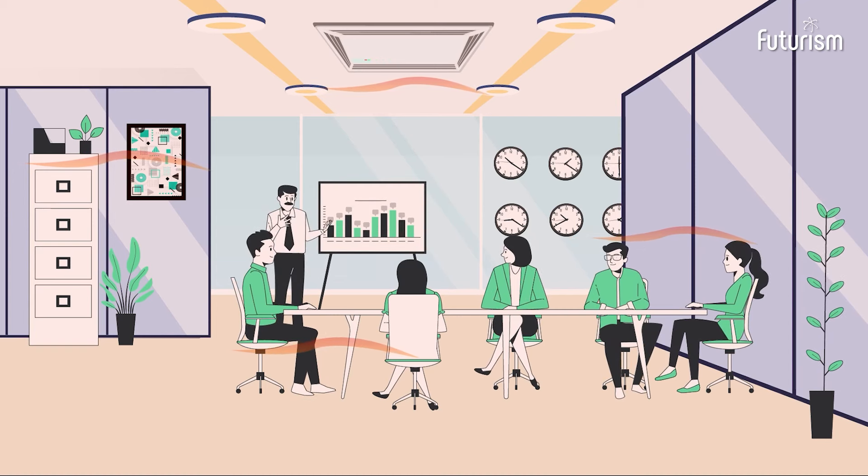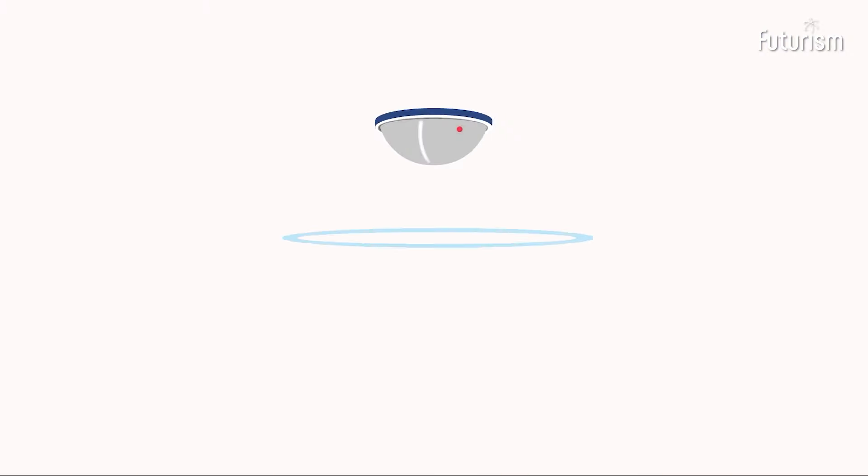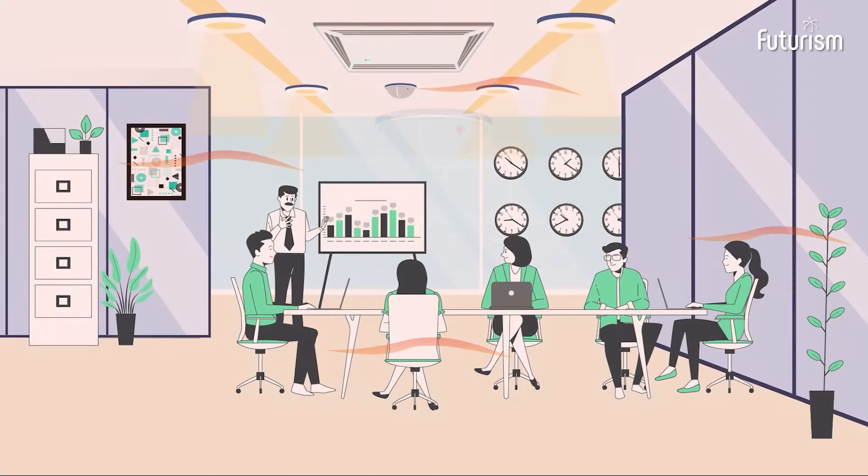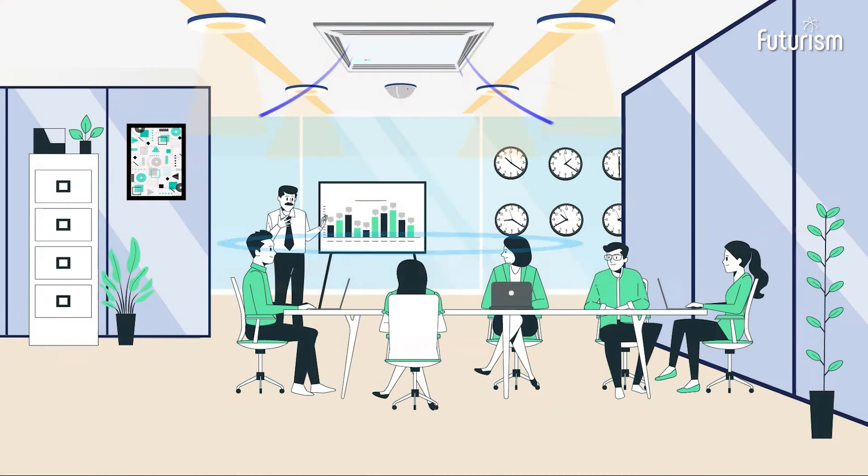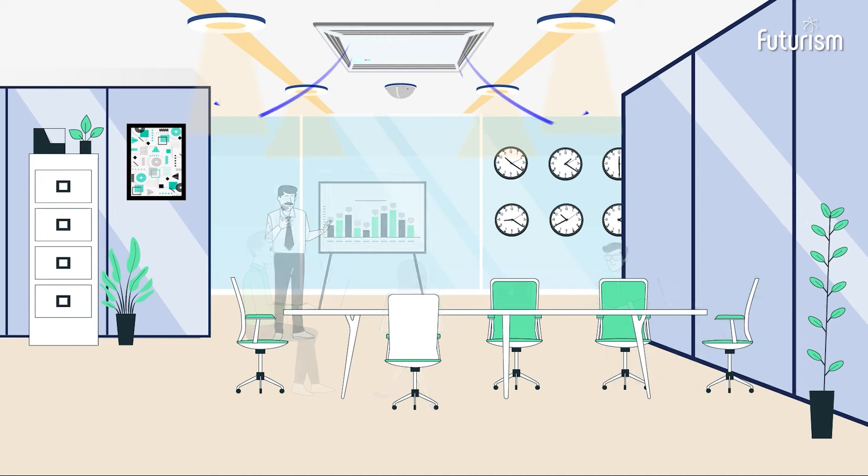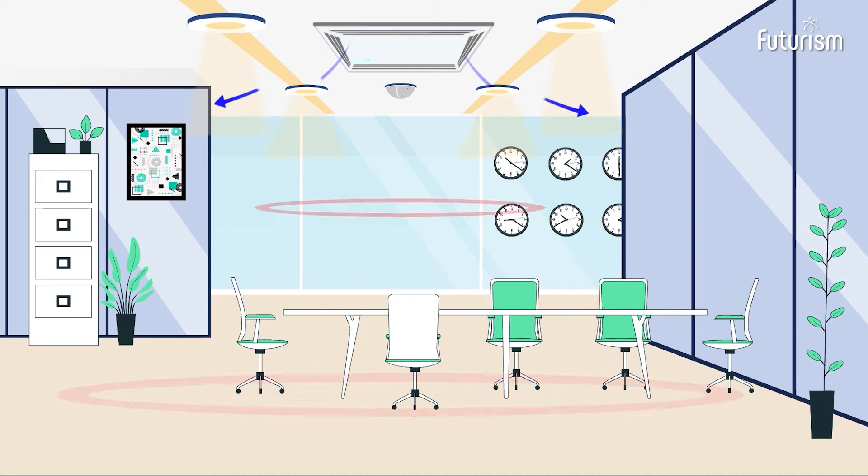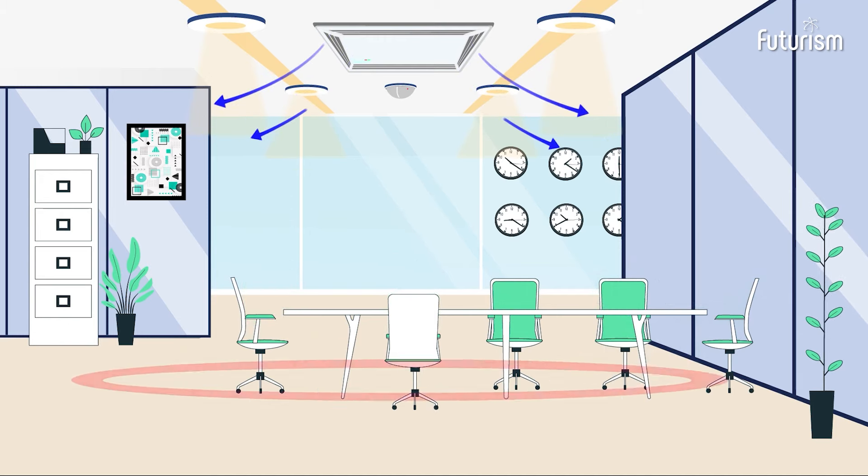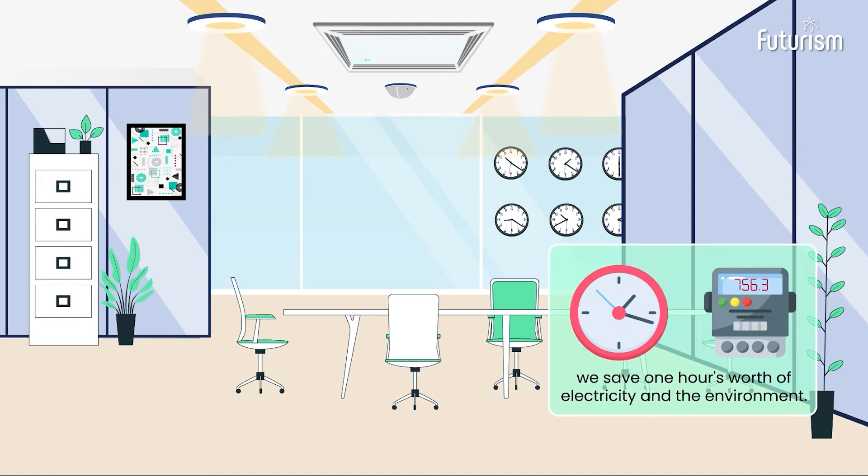the device detects their presence and automatically turns on the AC and lights, and the meeting proceeds for an hour as planned. At the end of the meeting, even if everyone leaves the AC and lights on, the device senses the lack of presence and promptly switches them off. In this way, we save one hour's worth of electricity.